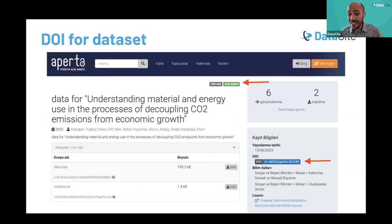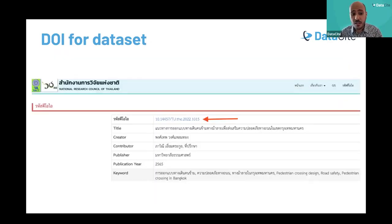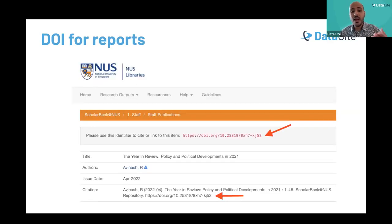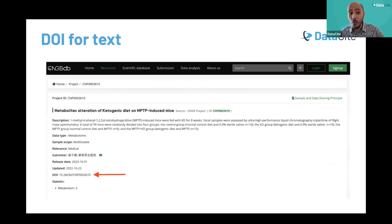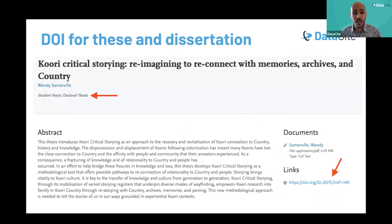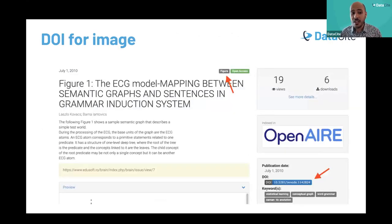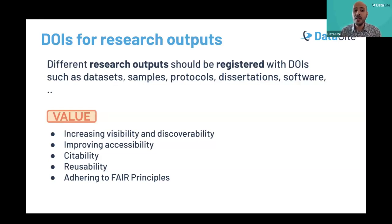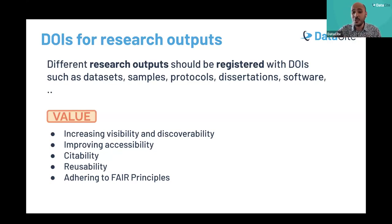This is an example from Aperta for a dataset with a DOI. Another example from the National Research Council of Thailand for a dataset with a DOI; a report using a DOI; a text file with a DOI; software code developed during research shared with the community — you can assign a DOI for that as well. Thesis with a DOI, image with a DOI. Why should we use DOIs for all these research outputs? Because DOIs really help in increasing the visibility and discoverability of your resources, improve accessibility, citability, and reusability — and they align with the FAIR principles.